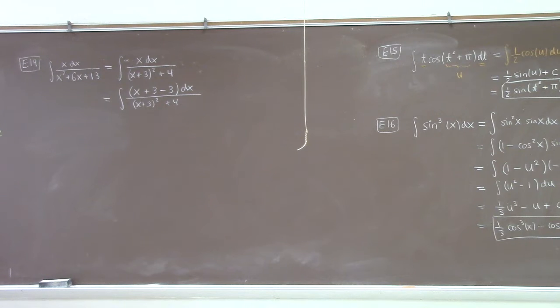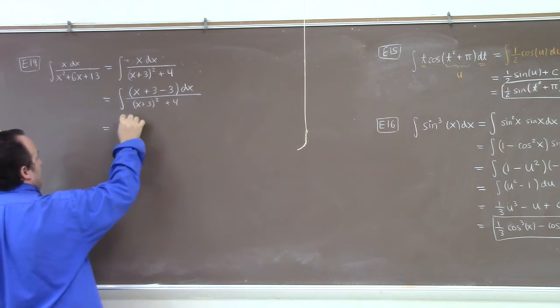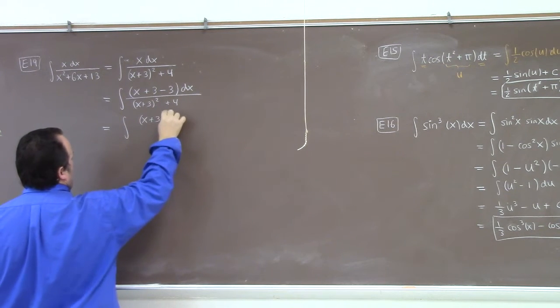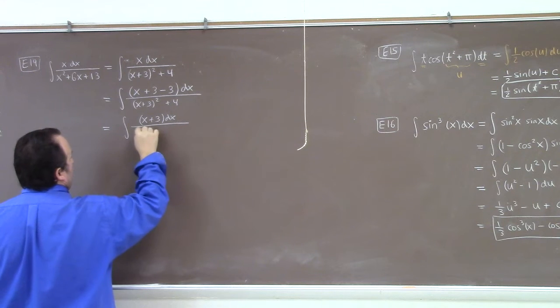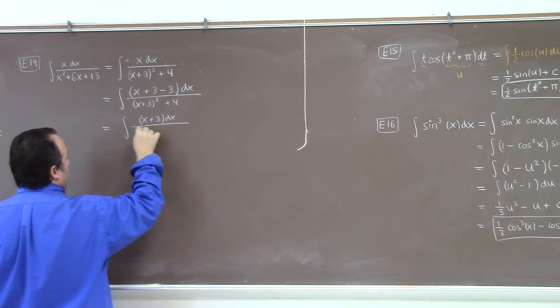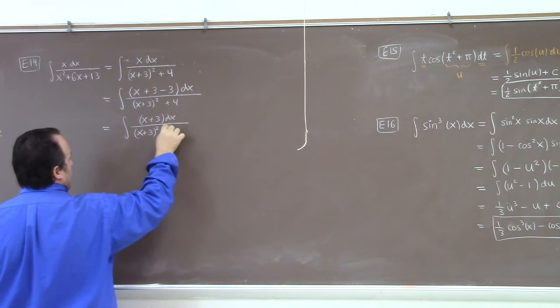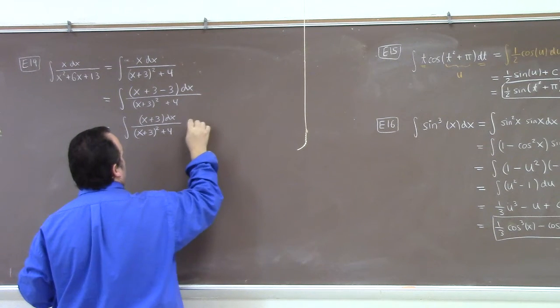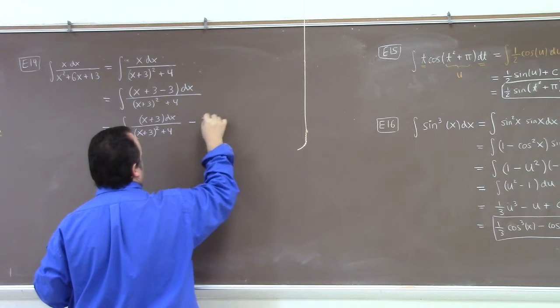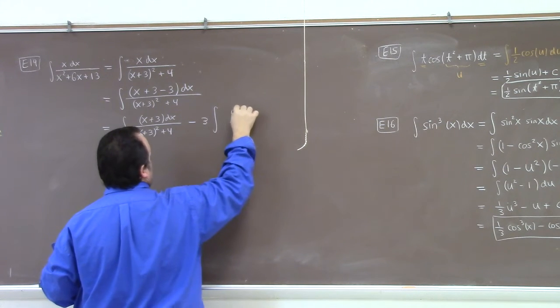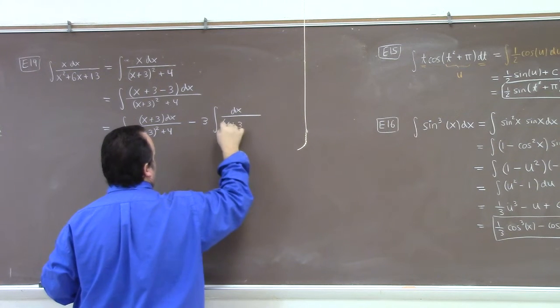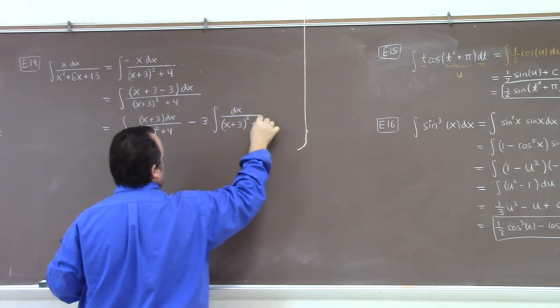So what I did was I added 0, right? But what's going to happen from doing that is I'm going to get two pieces. I'm going to get the piece that's like x plus 3 dx over x plus 3 squared plus 4, right? And then minus, let's say, 3 times the integral of dx over x plus 3 squared plus 4.